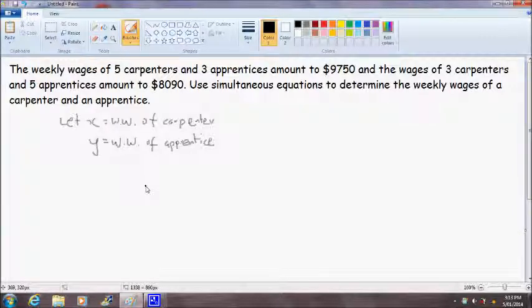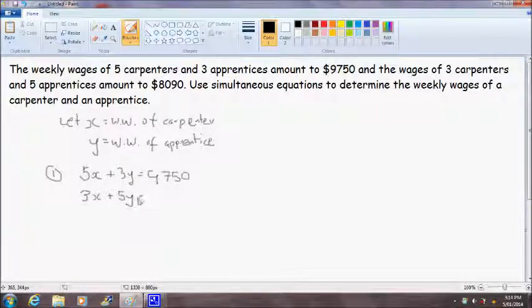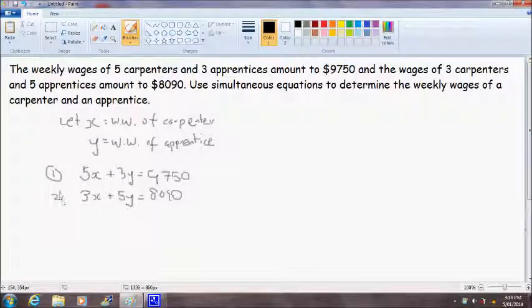Now that we've got our x and y representations of what we want to find, let's formulate two equations to help us solve the problem. The weekly wages of five carpenters, so 5x, and three apprentices, plus 3y, is equal to $9,750. We'll call this equation one. And the weekly wages of three carpenters, so 3x, and five apprentices, plus 5y, amounts to $8,090. We'll call that equation two.